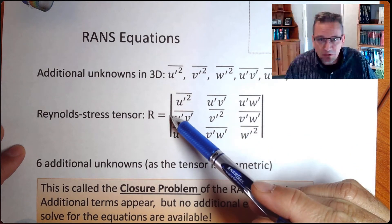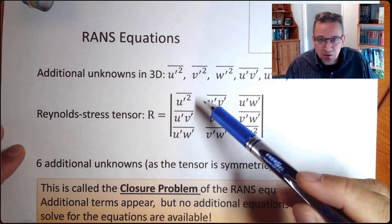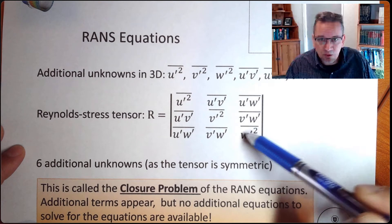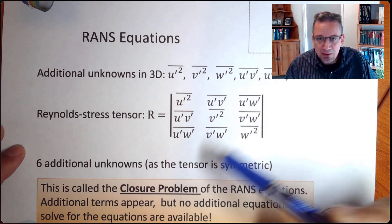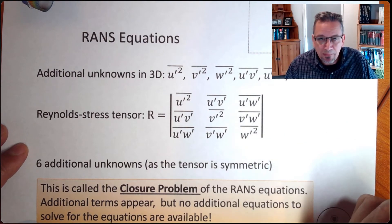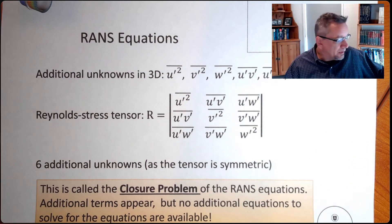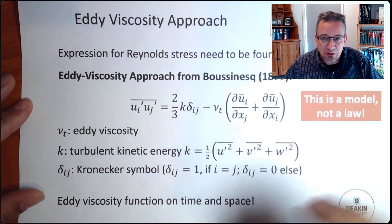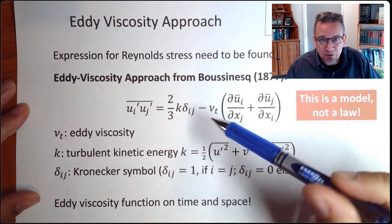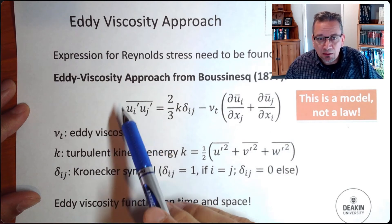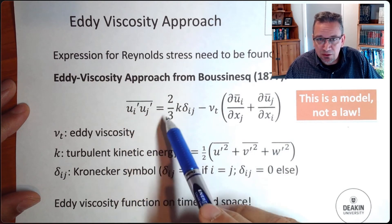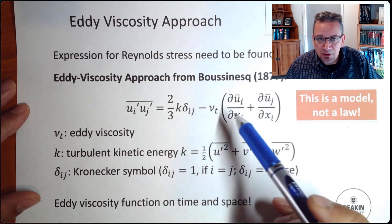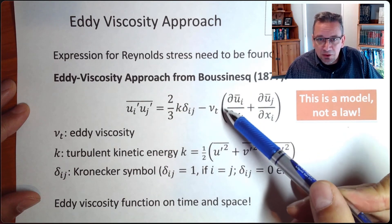So you have the whole RANS stress tensor. You have six components — because it's symmetric, you need six components of this tensor to close it. But you don't have any equations, so you need to find a model. And we know that the most commonly used model is the eddy viscosity approach, where we are using an expression for these Reynolds stress tensors using this expression, and introducing the eddy viscosity.